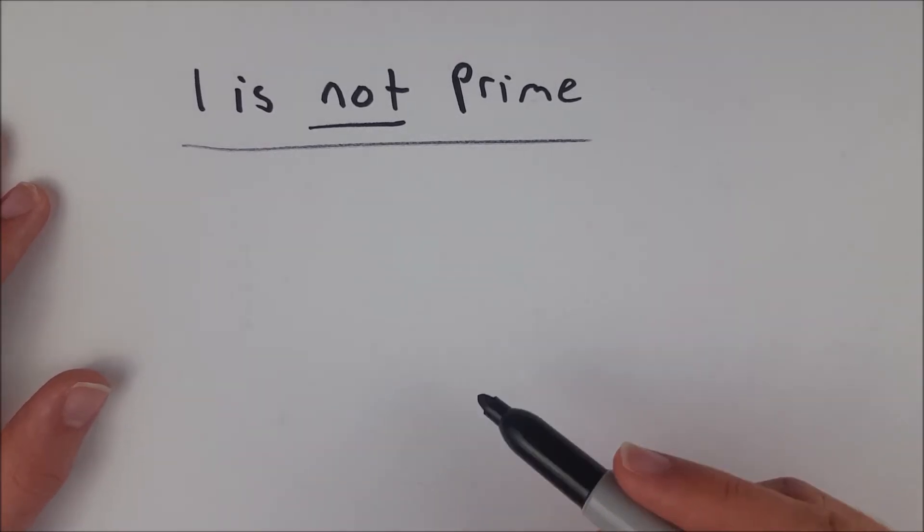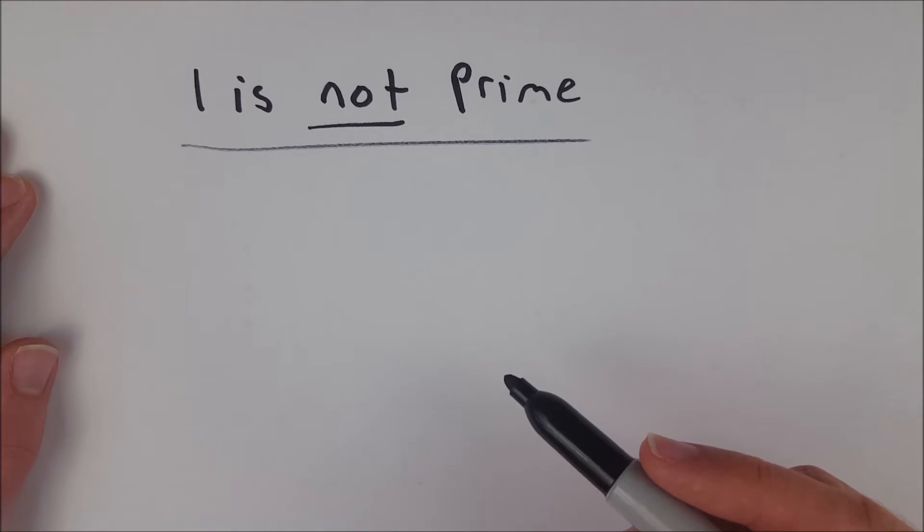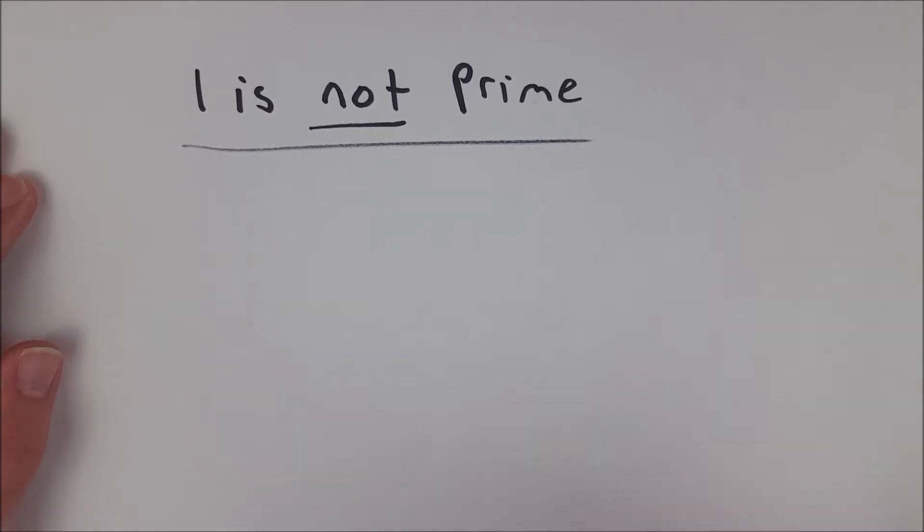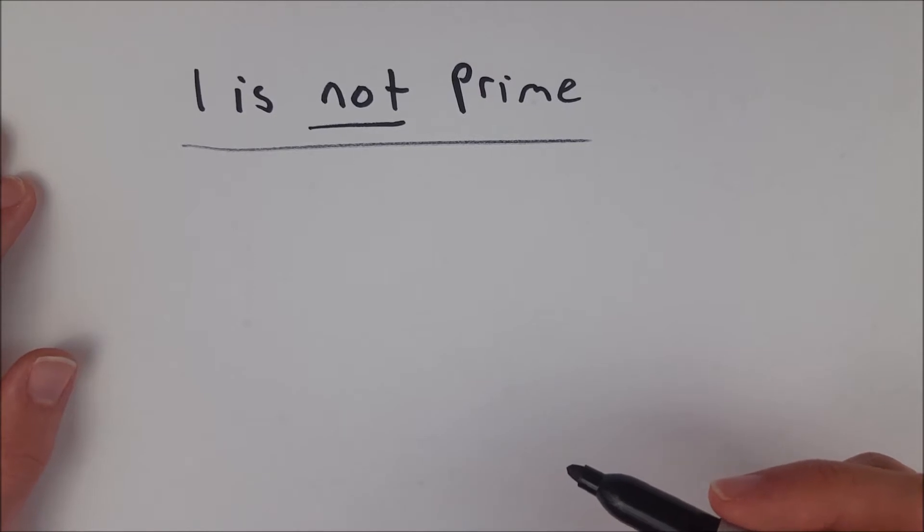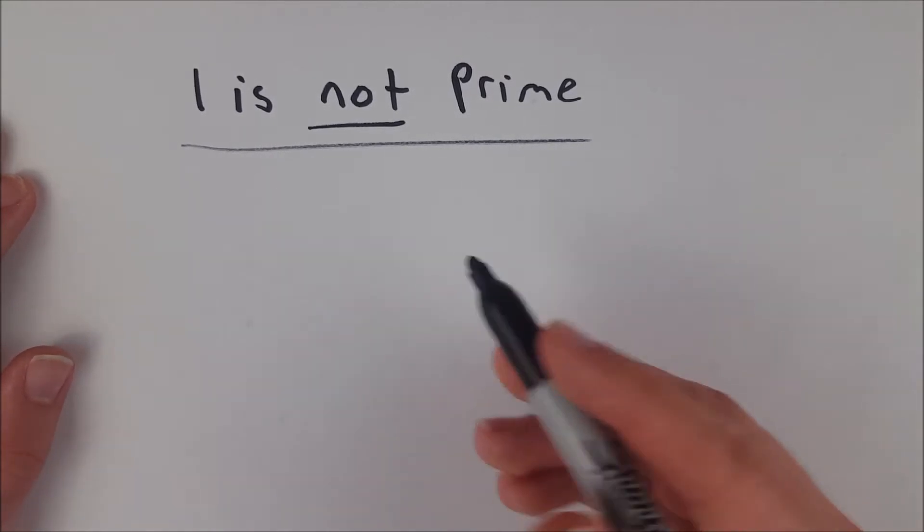So 1 is not prime. The question becomes not 'is 1 prime,' but 'why isn't 1 prime?' And I think there's two decent reasons I could tell you to explain this, although one of them is more so the real reason, and what I would find the better reason.